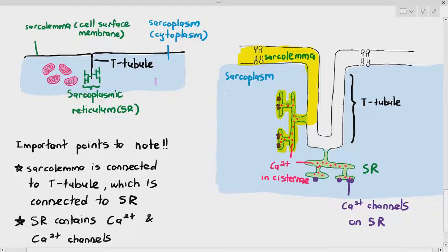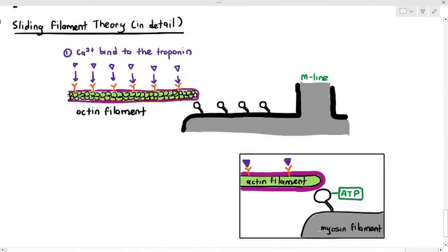Inside the sarcoplasmic reticulum, within the cisternae, there are calcium ions — and these calcium ions are very important. Recall that the first step in initiating skeletal muscle contraction is when calcium ions bind to troponin. So the calcium ions in the sarcoplasmic reticulum are directly connected to muscle contraction — and this video explains exactly how.